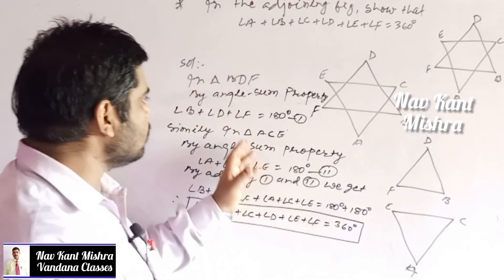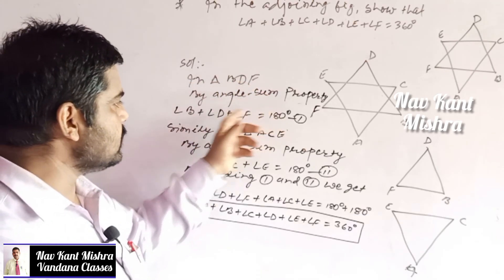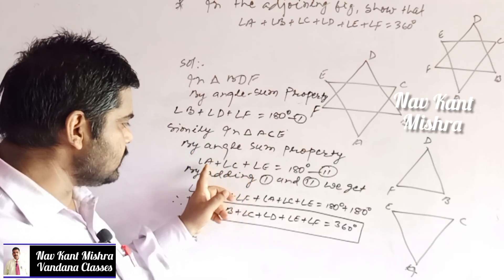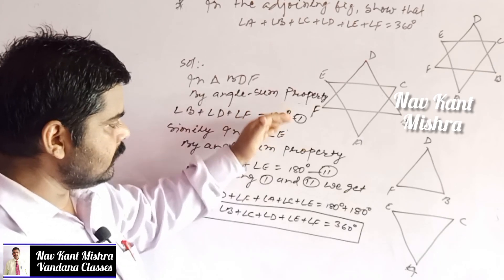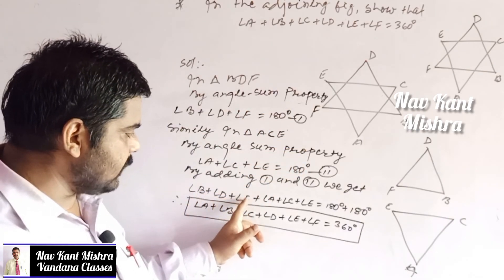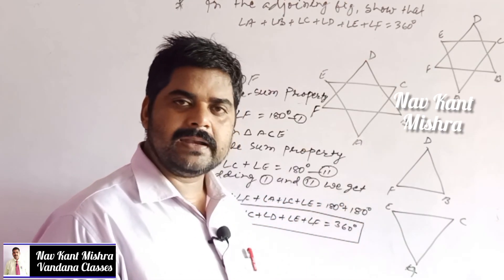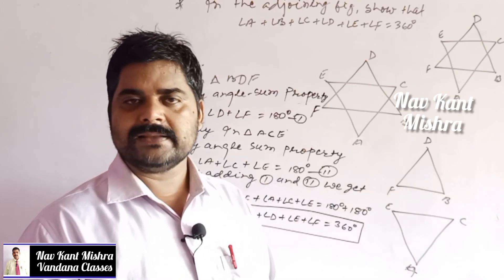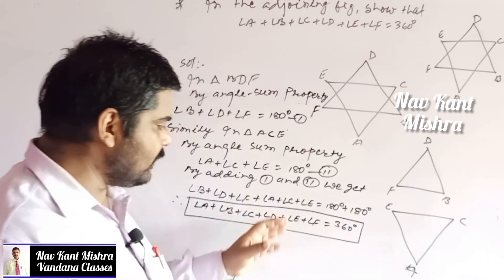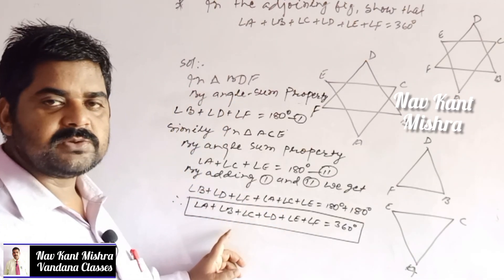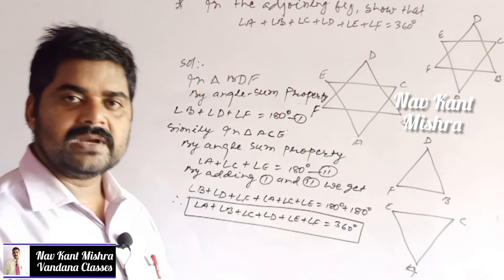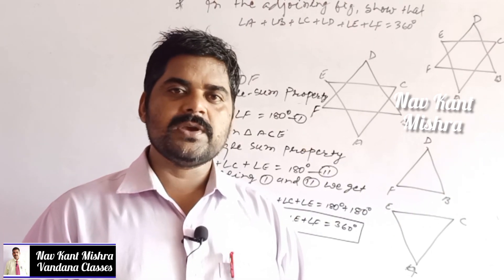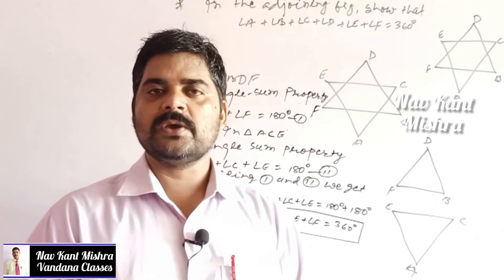In triangle BDF, by the angle sum property: angle B + angle D + angle F = 180°. In triangle ACE: angle A + angle C + angle E = 180°. Adding both equations, the LHS adds to LHS and RHS adds to RHS. By rearrangement: angle A + angle B + angle C + angle D + angle E + angle F = 360°. I hope you enjoyed this session — more questions in the next session. Thank you, keep watching Bandha Classes YouTube channel.